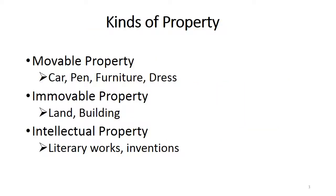The kinds of property are divided into three forms: movable, immovable, and intellectual property. Movable property can be a car, pen, furniture, dress — things which can be moved or replaced from one place to another. Immovable property includes land and buildings, and the third kind is intellectual property.